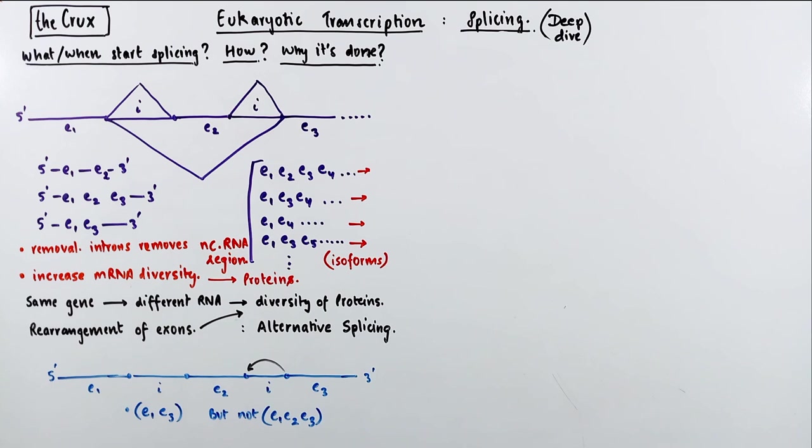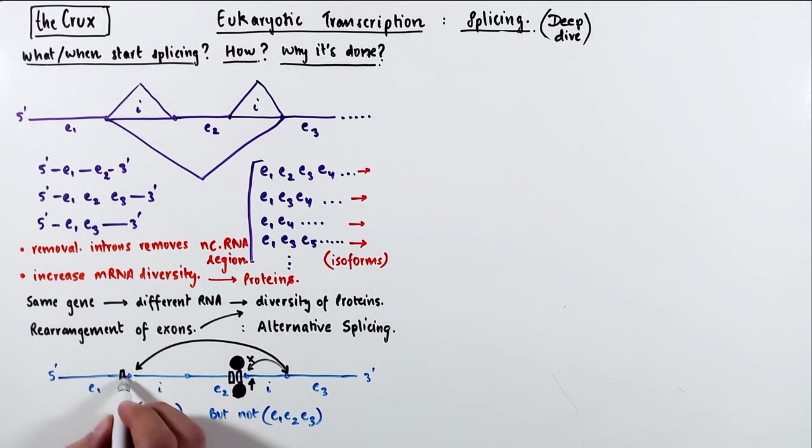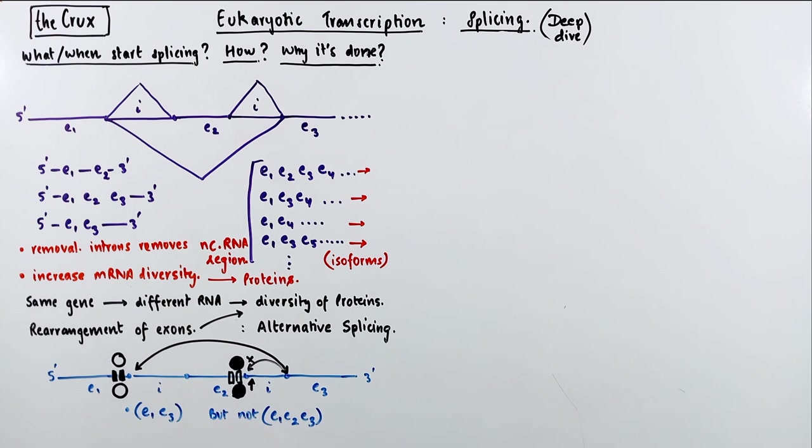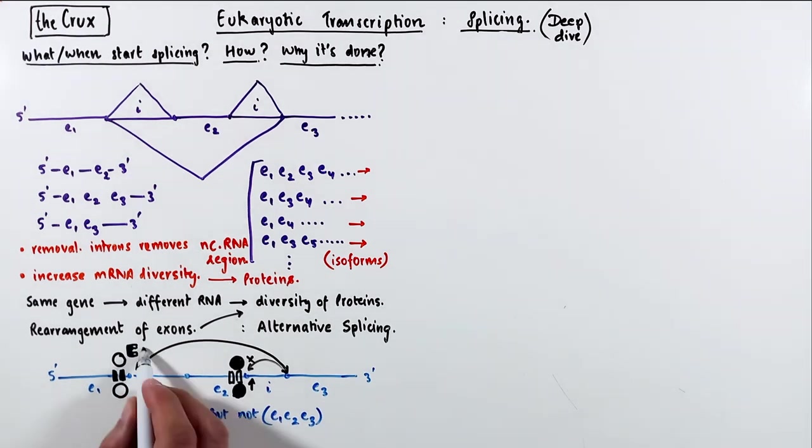But if you have to remove the second exon, the 3' splice site must engage in the transesterification with exon 1. So there must be a specific protein that should prevent the exon 2 from taking part in the second transesterification step.